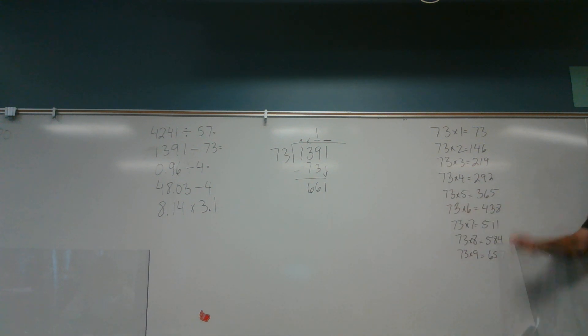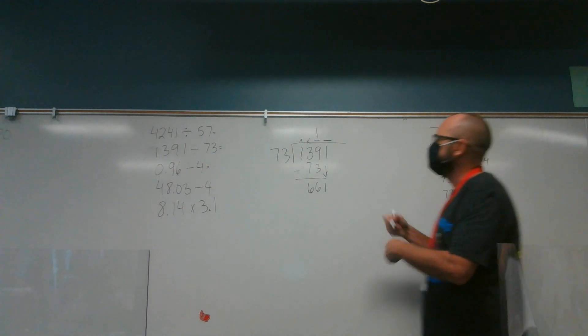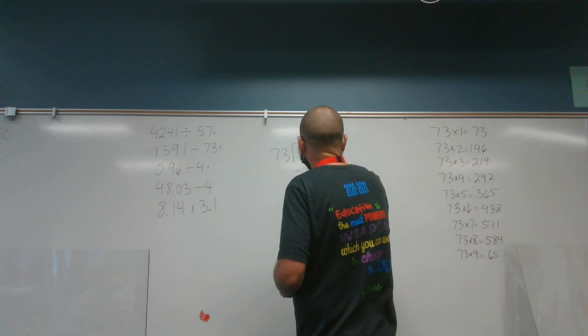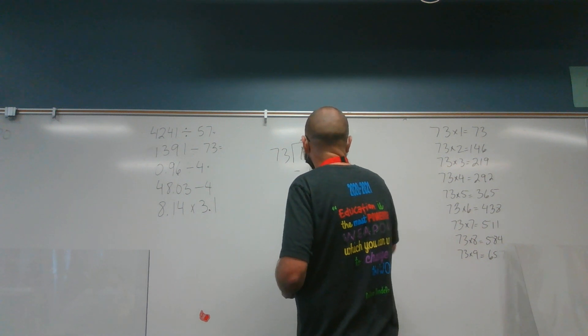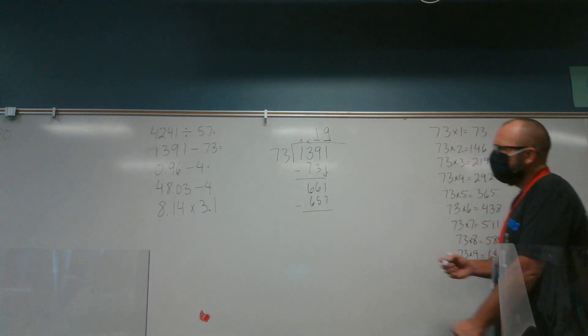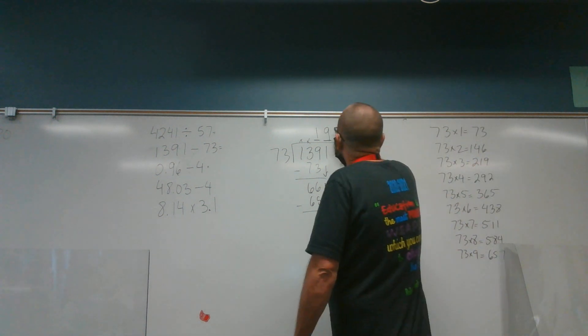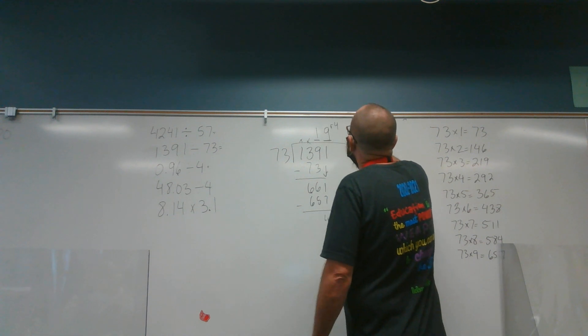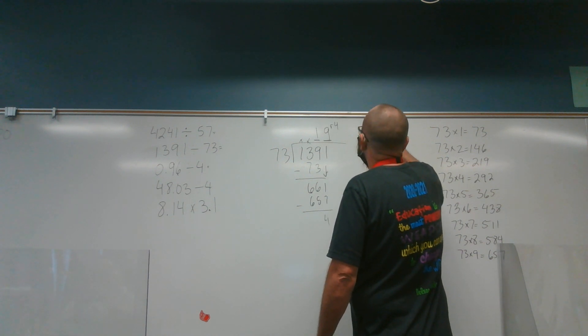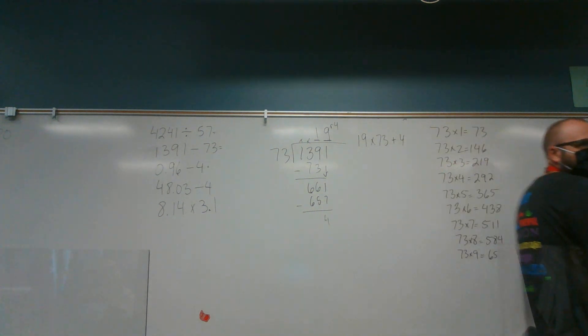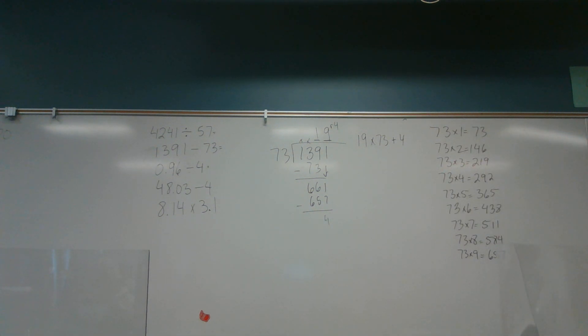Now I have to take it into 661. So I go down until I find closest to 661 as I can get, and it looks like times 9 because times 9 is 657. And that looks like it'd be 4. Is that right? Yes. Yeah. So if I wanted to check it, it would be 19 times 73 plus 4. Quotient times your divisor, add your remainder.